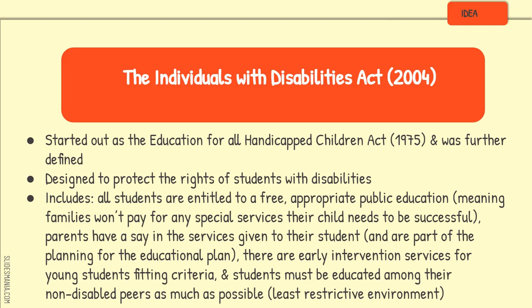Now let's circle back to the Individuals with Disabilities Education Act of 2004. It started as the Education for All Handicapped Children Act in 1975 and was further defined over the years. It is designed to protect the rights of students with disabilities. One of its main components is a free appropriate public education, meaning families won't pay for special services the child needs. Parents also have a say in the services given to their students.